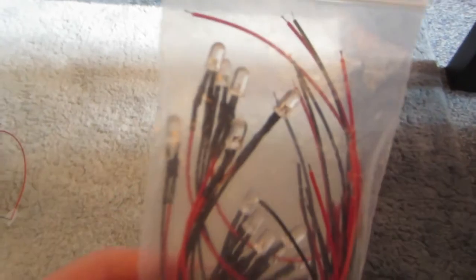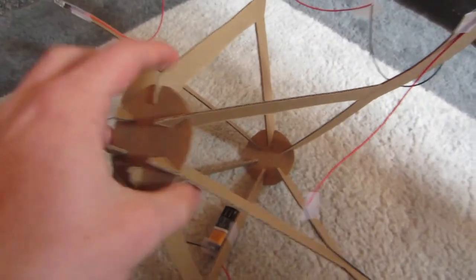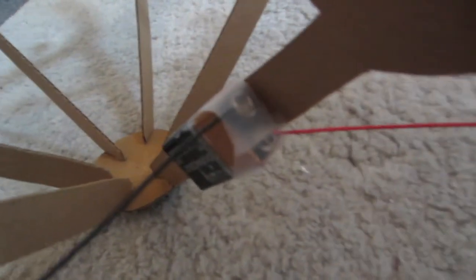So what I did was ordered a bunch of these little LEDs on Amazon and then I took them and taped one to each end and then connected them going around the chandelier and connected the final two to a battery.